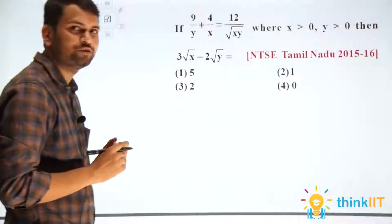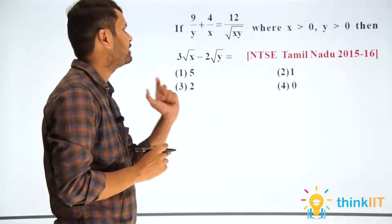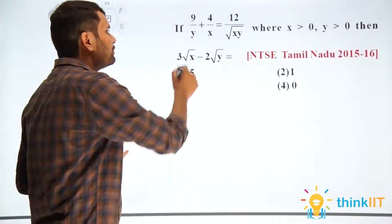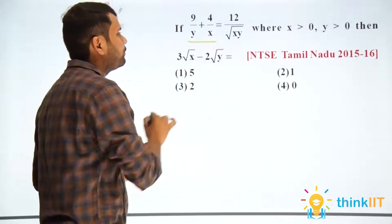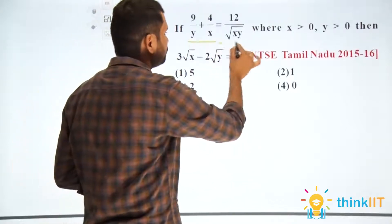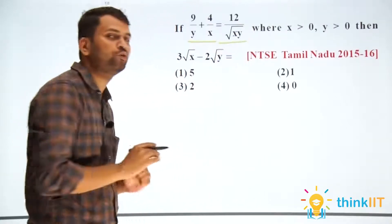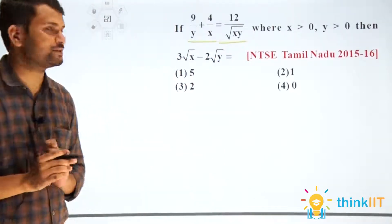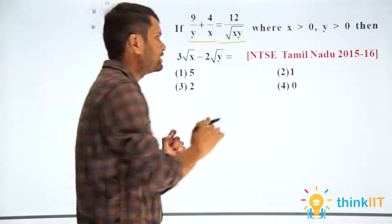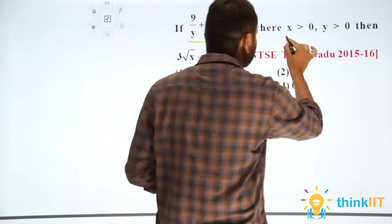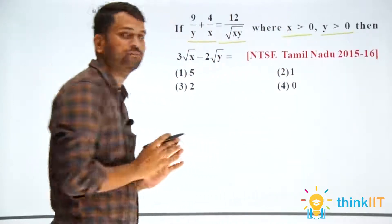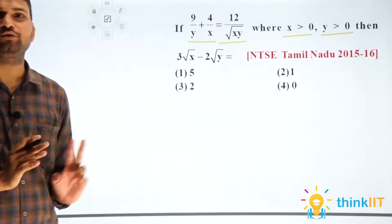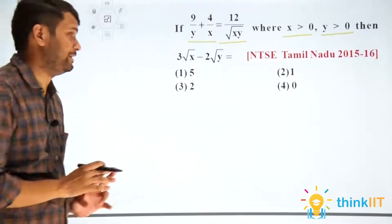Hello students, let's solve the question. The question is 9 upon y plus 4 upon x is equal to 12 upon root of xy, where x is greater than 0 and y is greater than 0. That means they are two positive quantities.